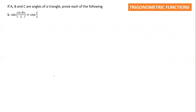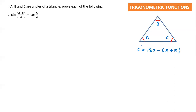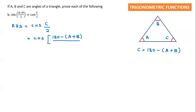Question B: same idea. The triangle has angles A, B, and C, where C = 180 minus (A plus B). We're going to use the right hand side again. The right hand side is cos(C/2). Substituting, C = 180 minus (A+B), so we have cos of [180 minus (A+B)] divided by 2, which equals cos of 90 minus (A+B)/2.